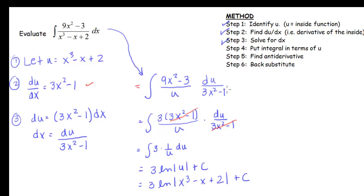Next I put the integral in terms of u. When I first put it in terms of u I didn't see a direct way to cancel this 3x² - 1 right off the bat. But I noticed that I could factor this numerator as 3 times (3x² - 1). And now my 3x² - 1 will cancel. I end up with 3 times 1/u du. So I've put my integral totally in terms of u, I no longer have any x's.